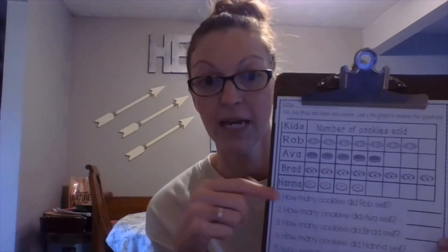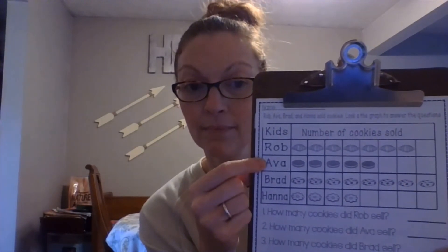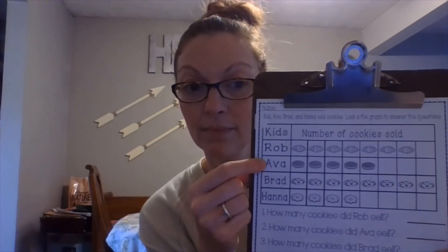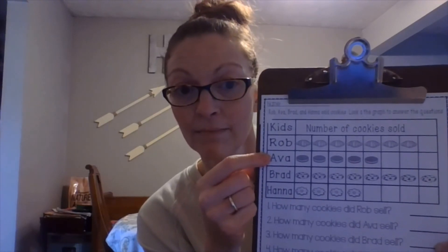Each box represents one cookie. So go ahead right now, count. How many did Ava sell? How many cookies did Ava sell? Yep, five. One, two, three, four, five.